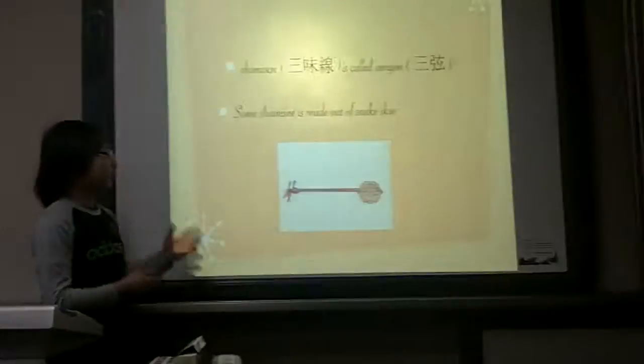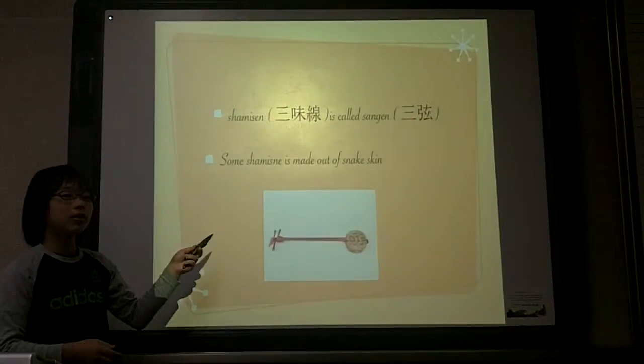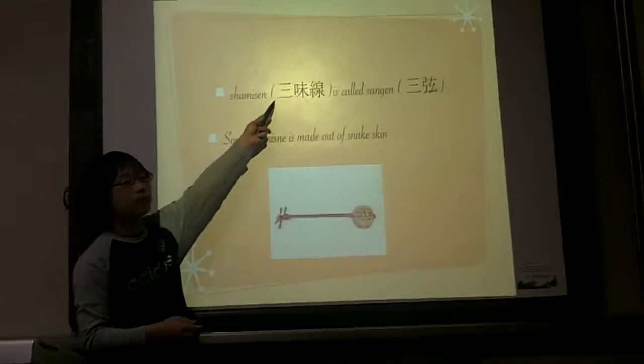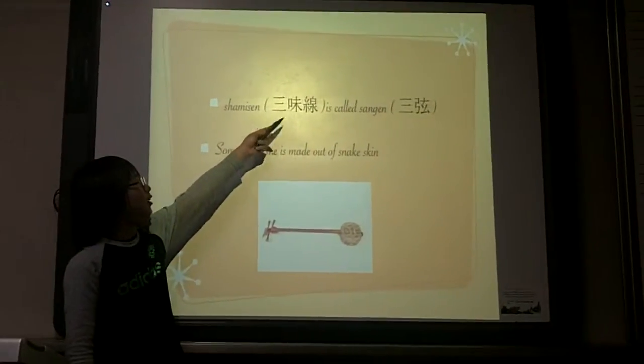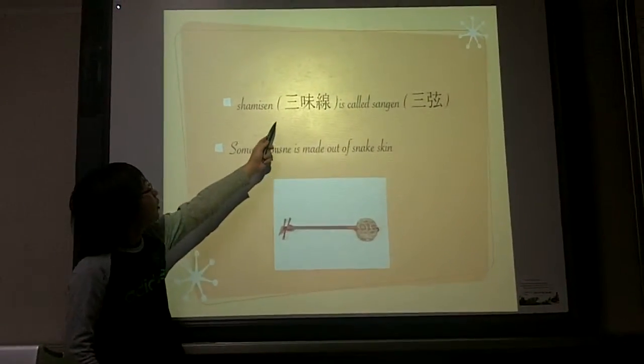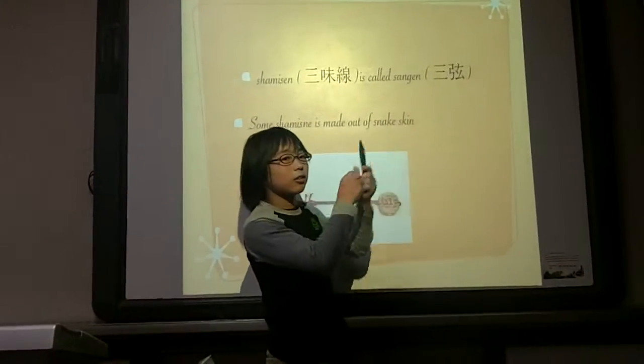What does shamisen mean? Shamisen means three strings. This three line means three, and this means string.